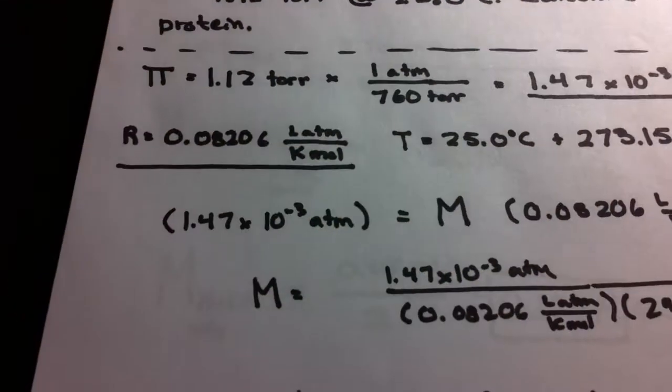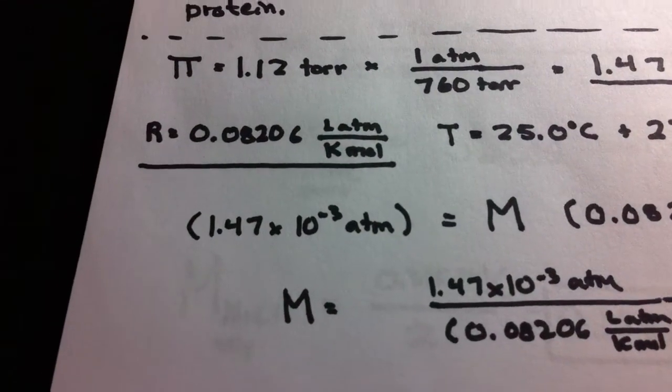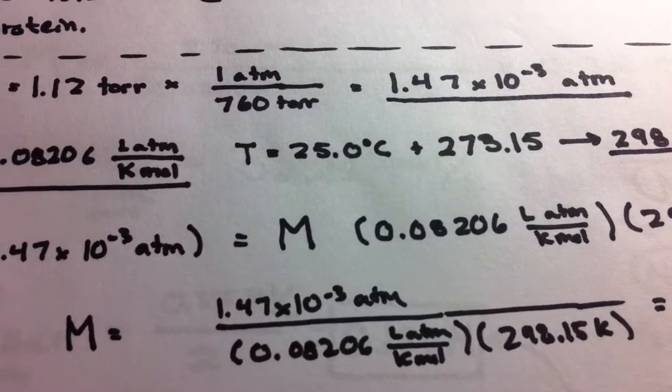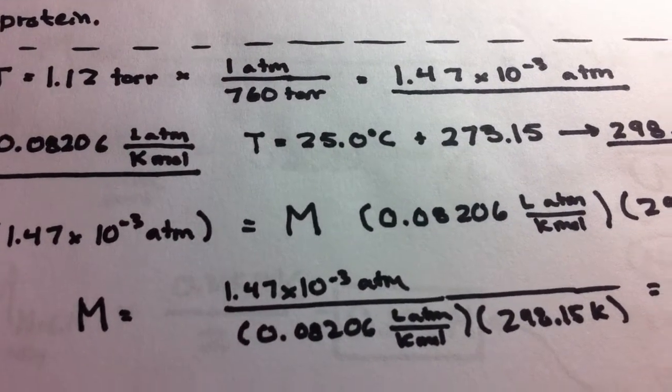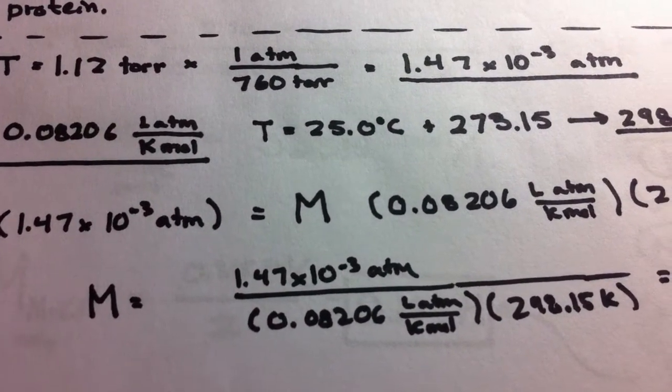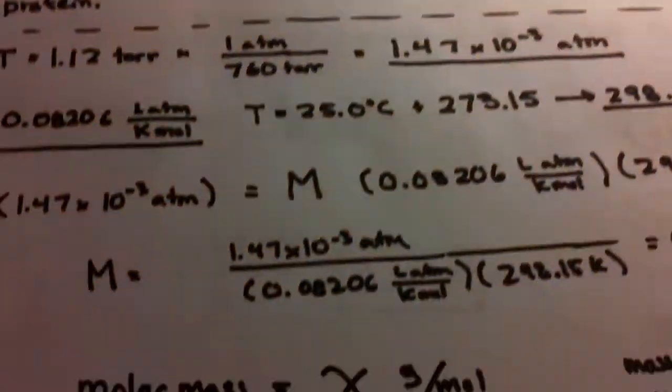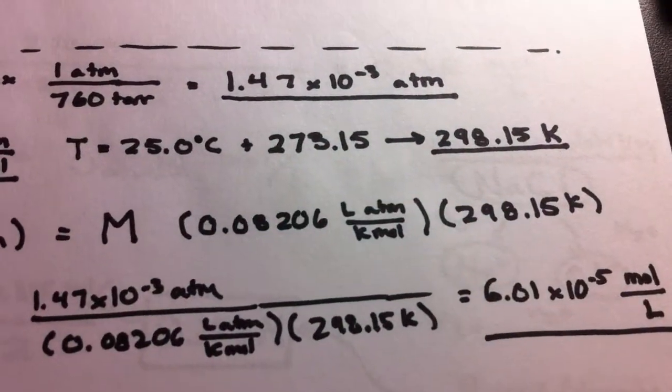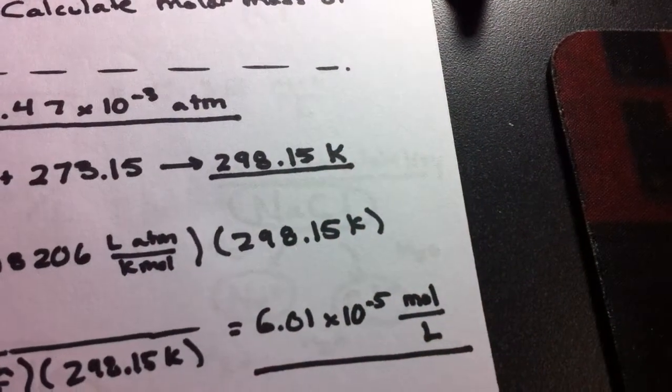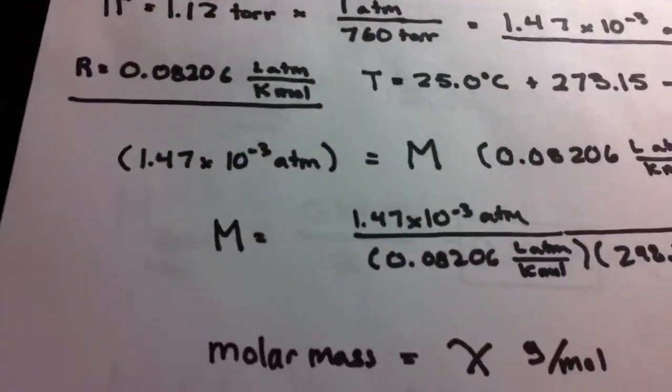Plug and chug. We have π osmotic pressure here. M is what we don't know, and it's the molarity of the solute, which will help us find the molar mass. R we know, and K we calculate.